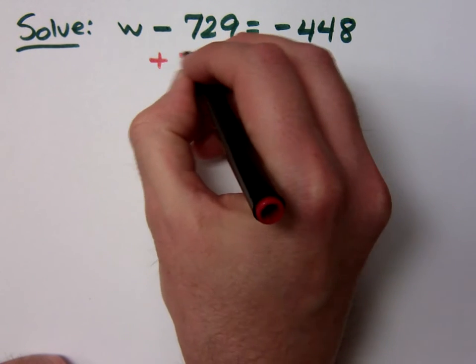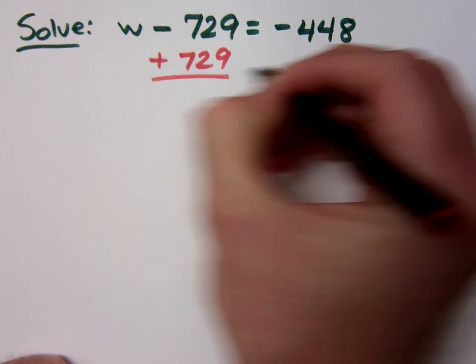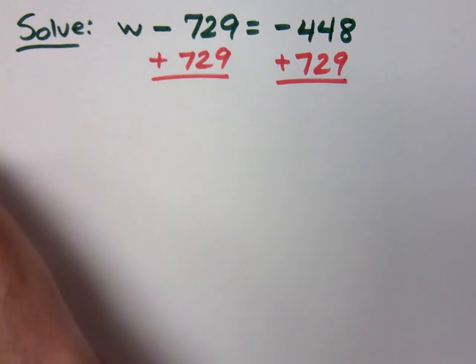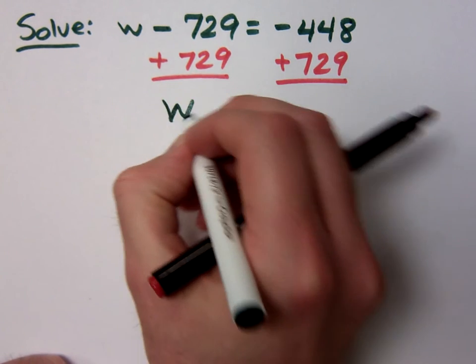Inverse is adding 729. If I do that to both sides, you have to be very careful about what you see on the right side. On the left is just W,